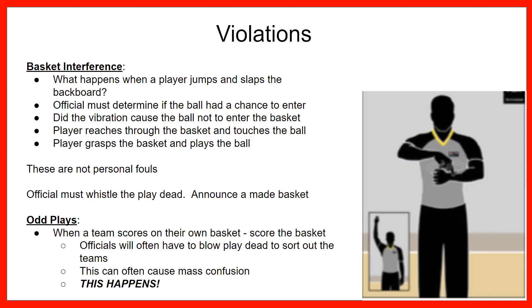If somebody reaches through the bottom of the net and hits the ball out, that's also basket interference — tweet it, score the hoop, give the ball in and go. If a red team scores on their own basket — and this happens — the whole place gets confused. What I generally do is whistle it, score the basket for the other team, and get everybody going in the right direction again, because if you score on your own net, the other team will grab the ball and start going the wrong way and nobody knows who the points are for.